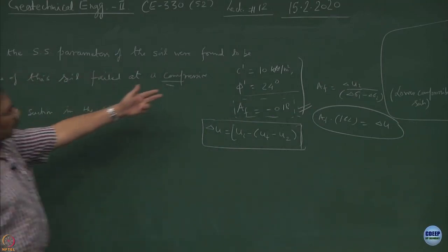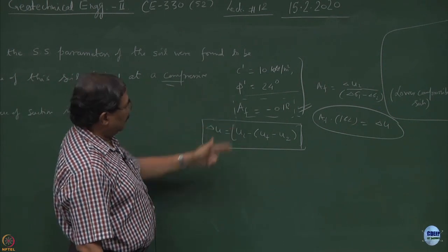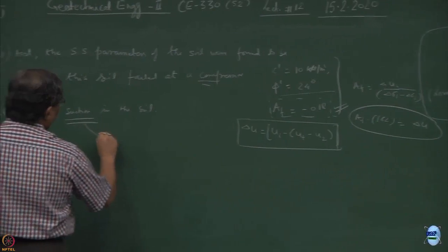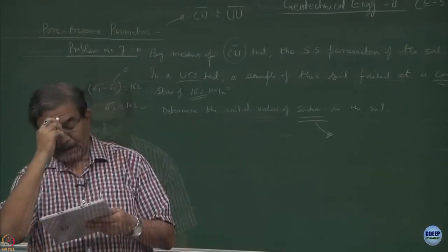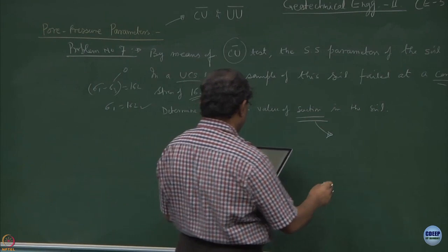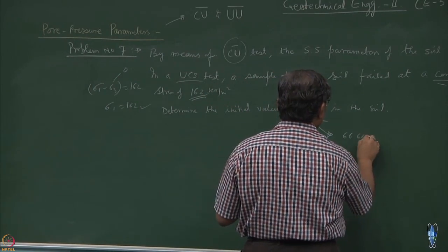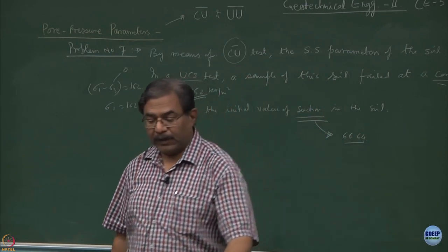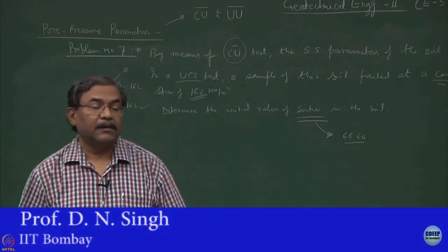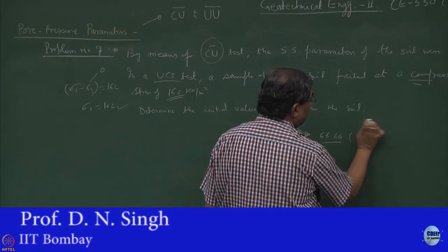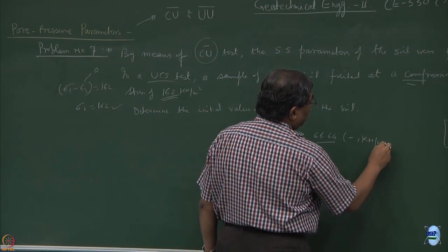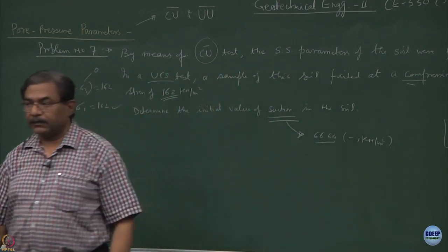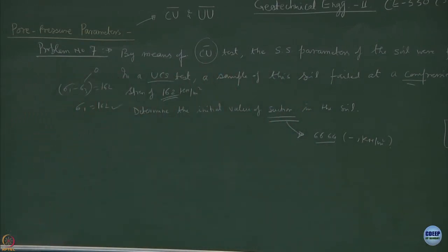Rest is simple. You have the Mohr-Coulomb envelope given to you, AF value was known, compute the suction value and this comes out to be 66.64. Be careful with the sign of the pore water pressure. It is a negative value in kilo Newton per meter square.